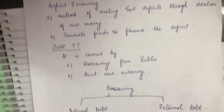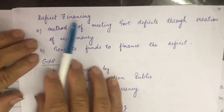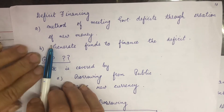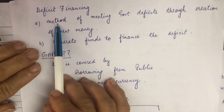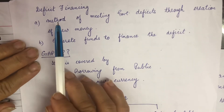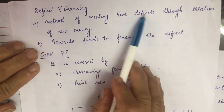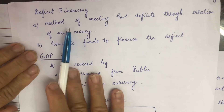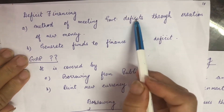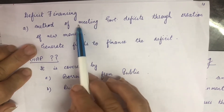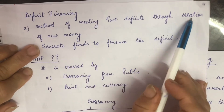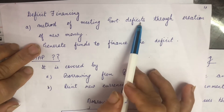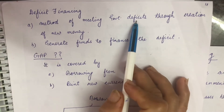Now, what is deficit financing? We can give two definitions here. First: it is a method of meeting government deficit through creation of new money. The government has a deficit — a gap — which needs to be met. New money is created to fill that gap. If you have 15 rupees but need to spend 20 rupees, you borrow 5 rupees from someone. The government creates new money to fulfill that gap.